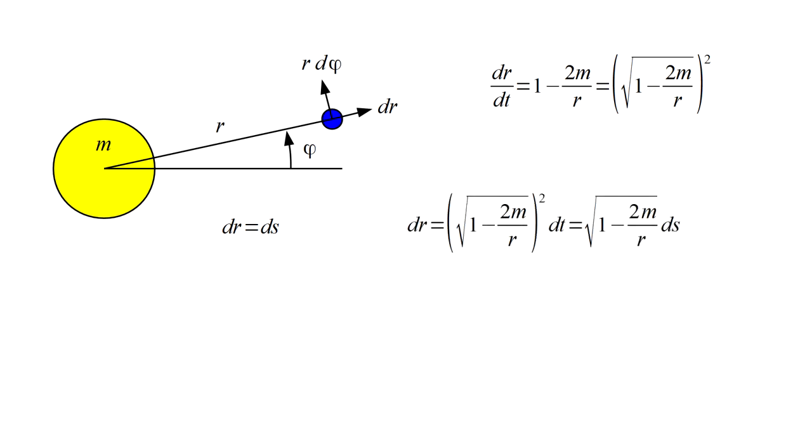For the distant observer, dr equals the Schwarzschild factor squared times dt. We can account for the time dilation by replacing one Schwarzschild factor times dt by ds. But this still leaves a Schwarzschild factor, and this result does not agree with what we assume for the local observer.